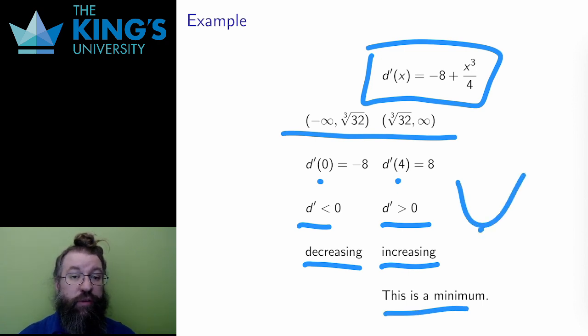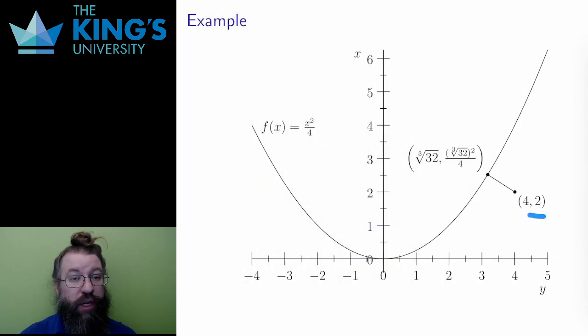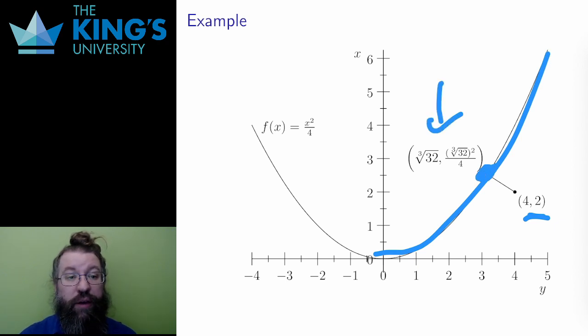And here is a picture of the situation. (4,2) is this point outside the parabola. As the parabola passes by this point, there is indeed a closest point. The coordinates of that point are the values I just found. Cube root of 32 and the square of the cube root of 32 over 4.